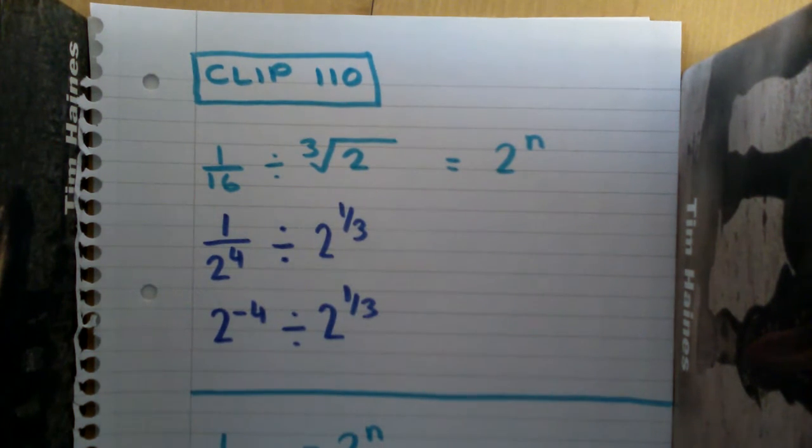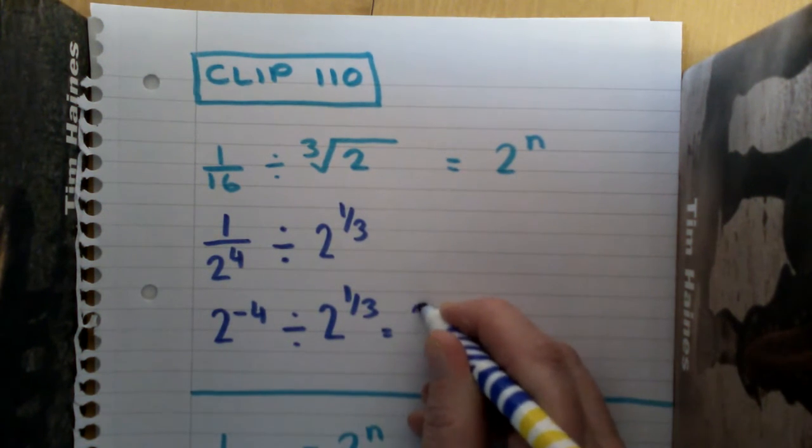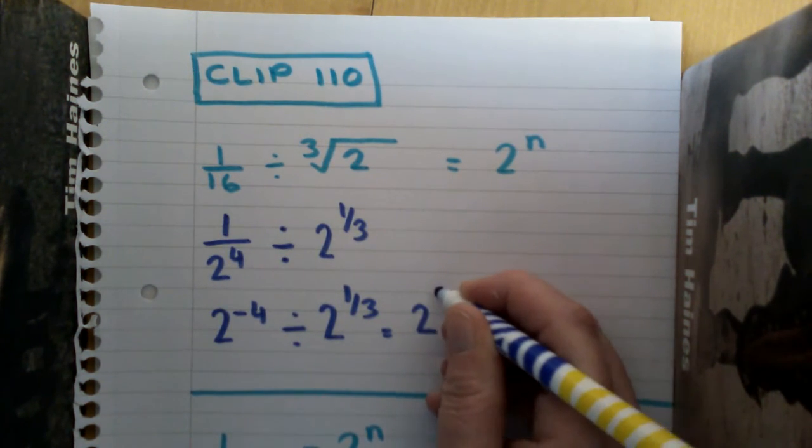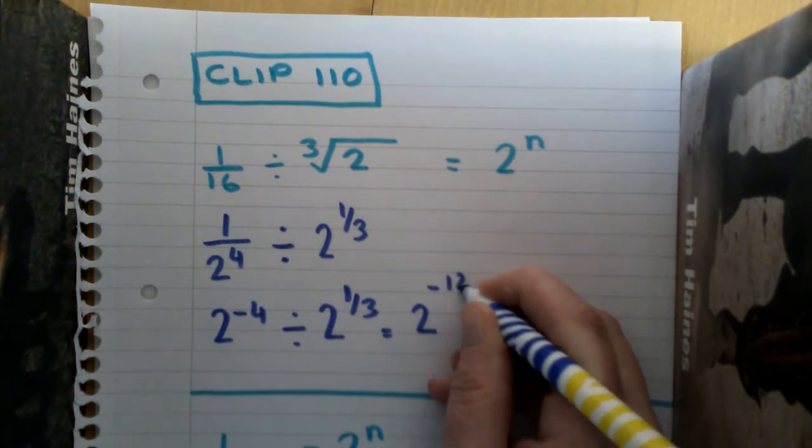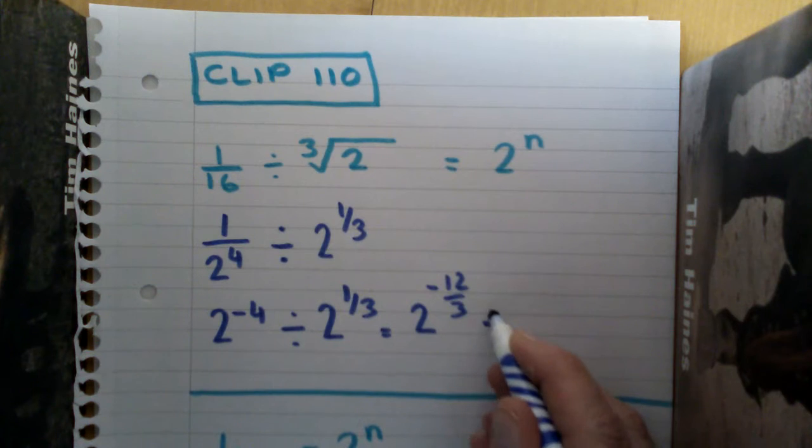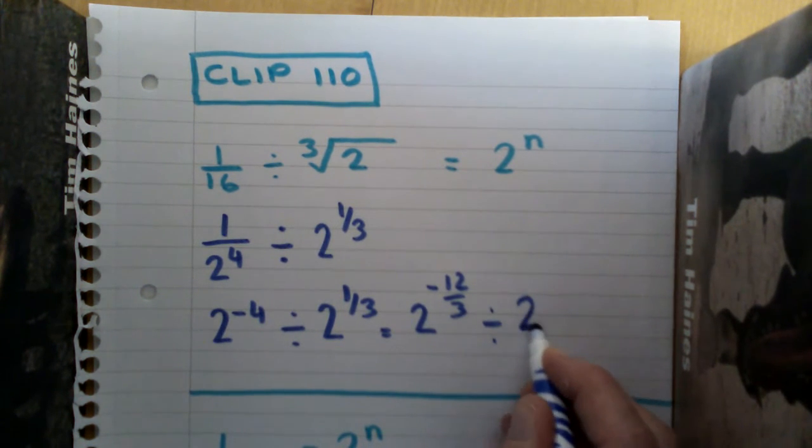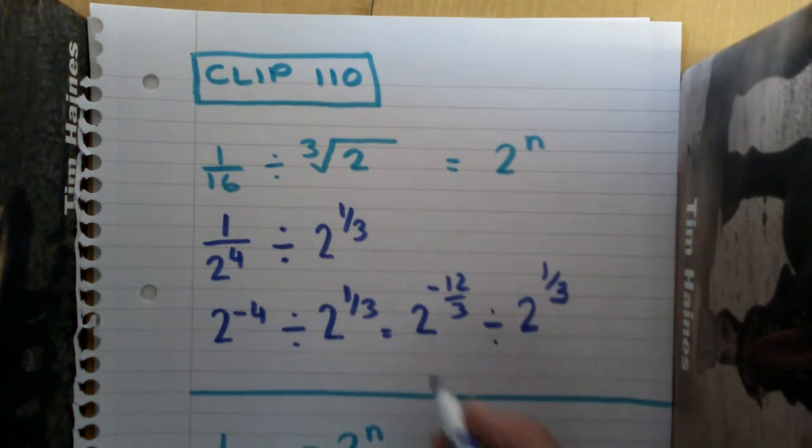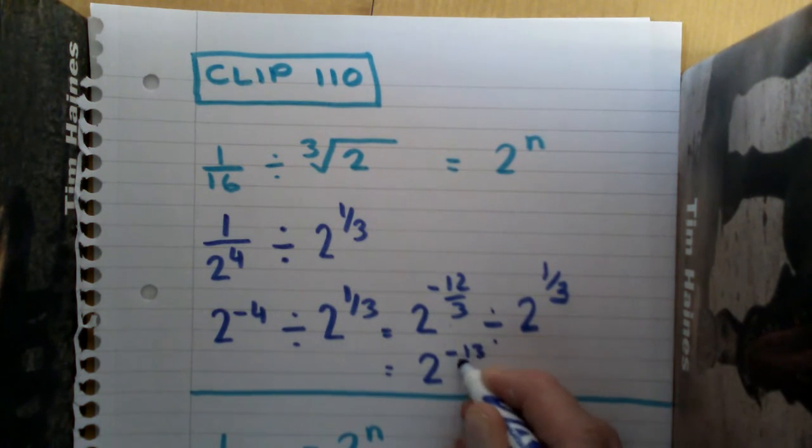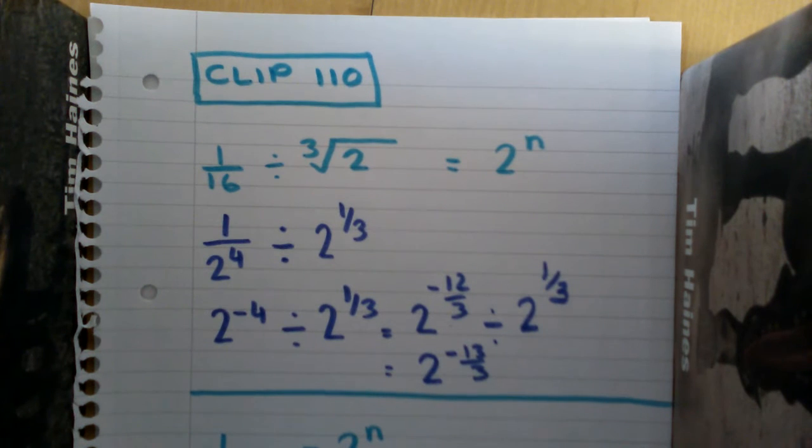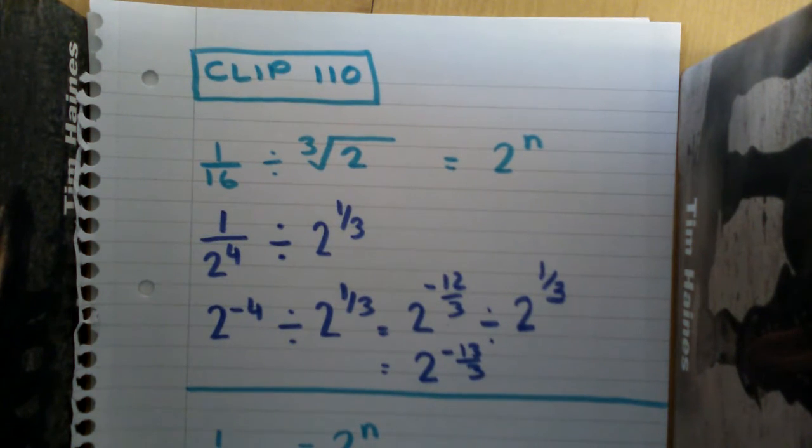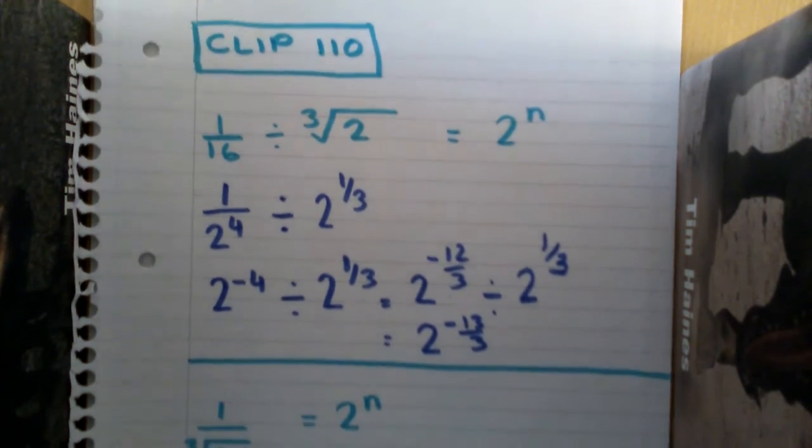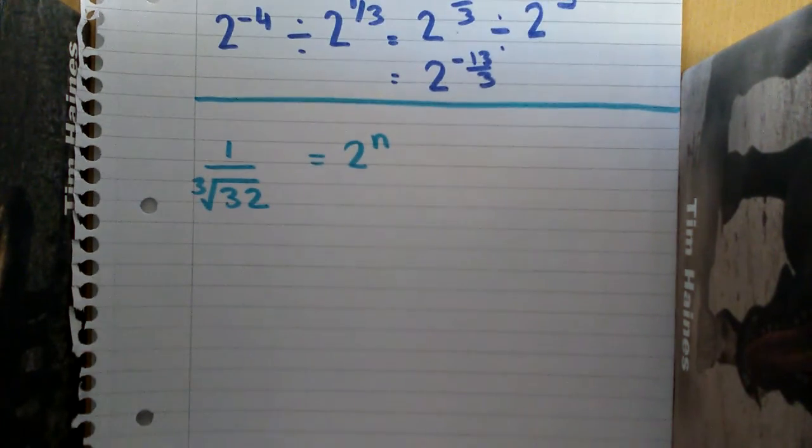To be able to take away that one third, I need to change that minus 4 into thirds, so that becomes 2 to the minus 12 over 3 divided by 2 to the one third. If I do minus 12 over 3 take away 1 over 3, I end up with 2 to the power minus 13 over 3. So n is equal to minus 13 over 3.